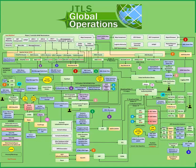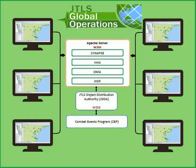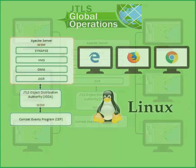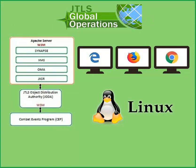JTLS-GO is not a single program. It is a system of multiple, separately executing programs that function together to accomplish the goals of the simulation. JTLS-GO is a web-enabled system which normally executes on a server or servers that any computer with access to the network can connect to, allowing many individual operators to monitor and submit orders to forces under their control. The primary programs run on the Linux operating system, while the user interface programs may run on any operating system through a Java-enabled web browser.